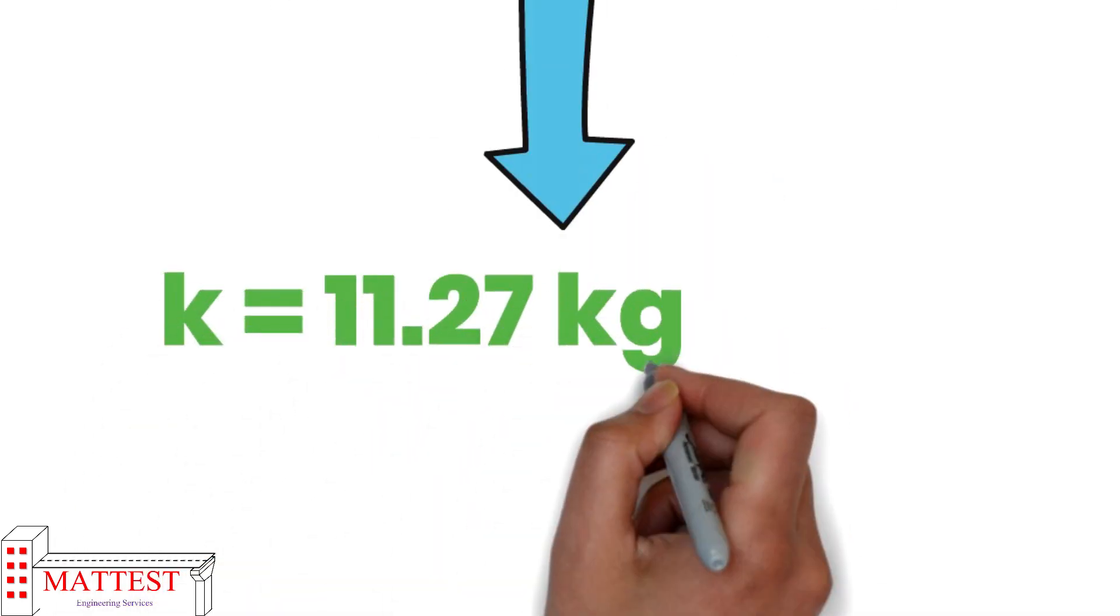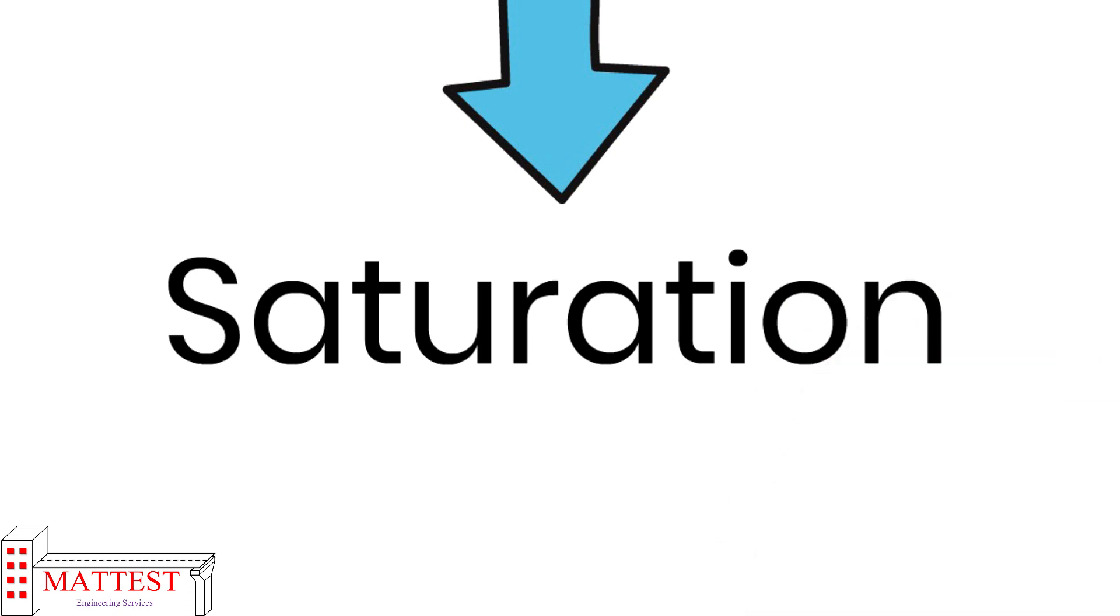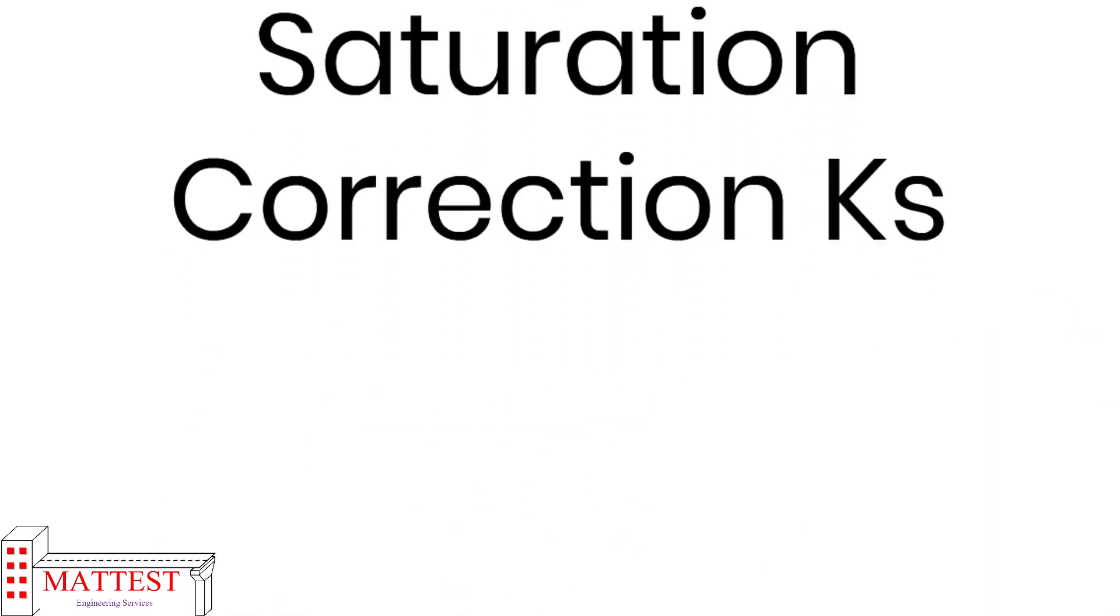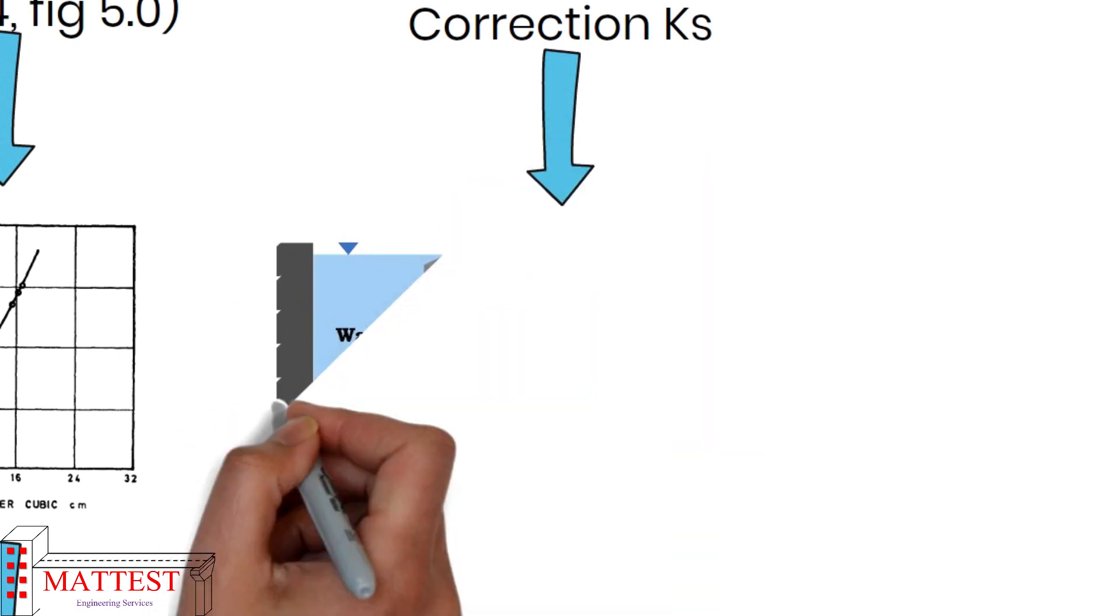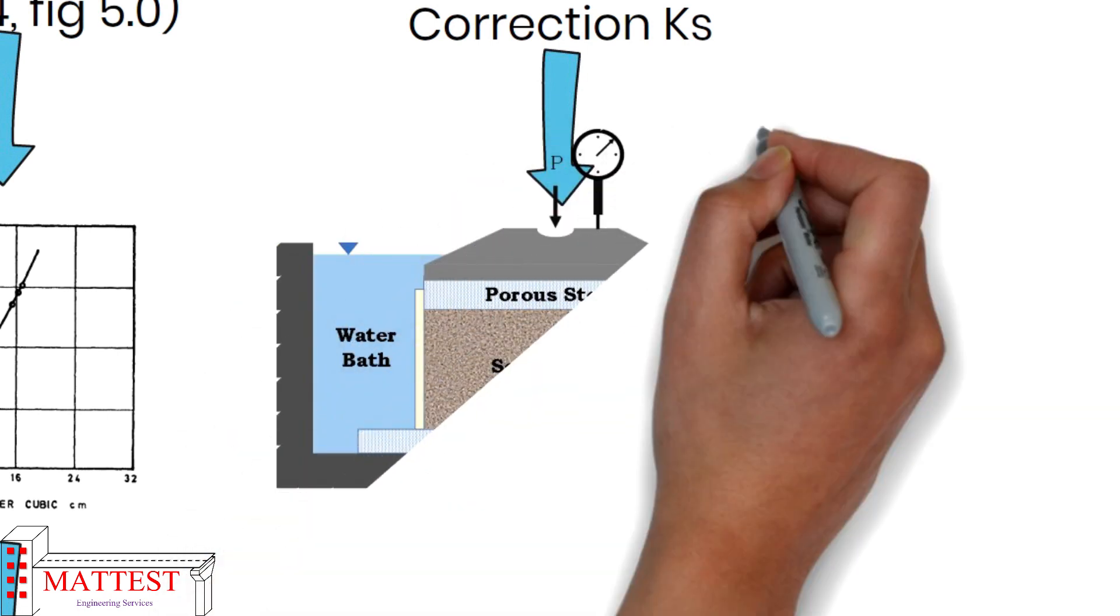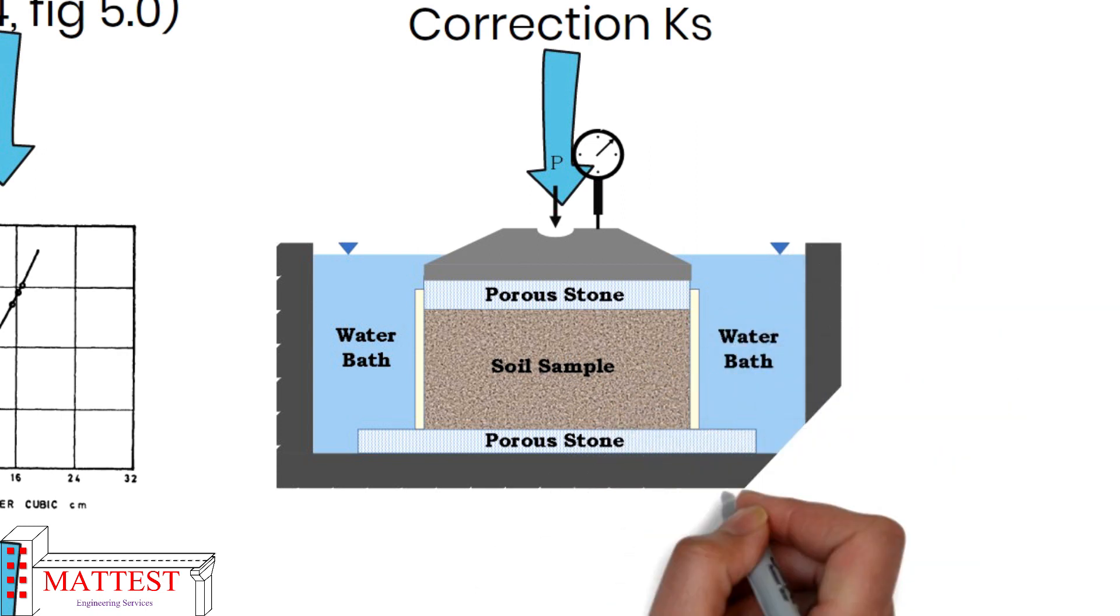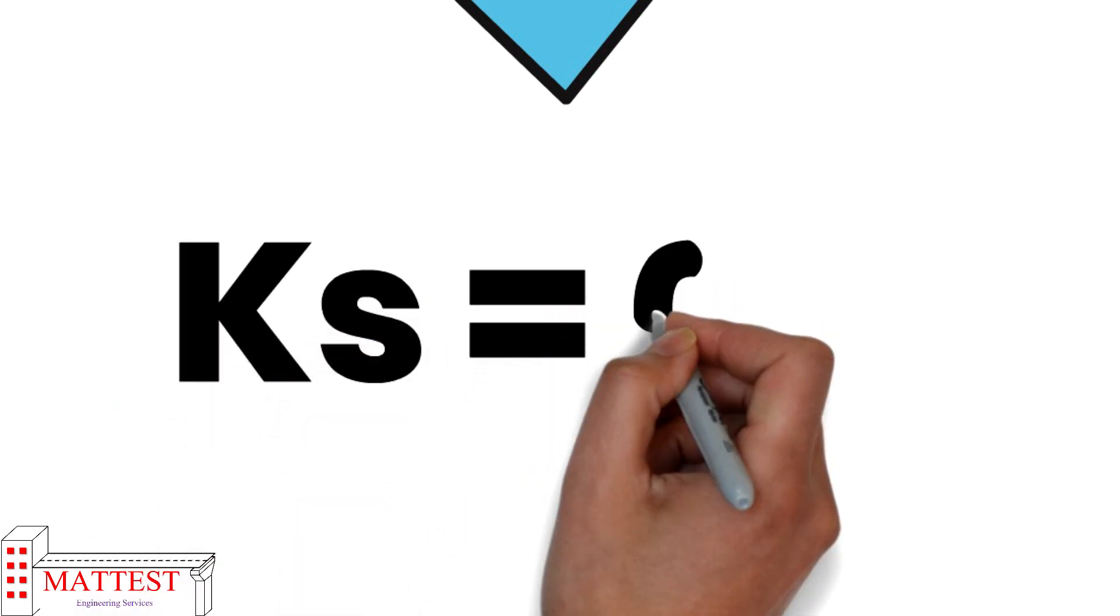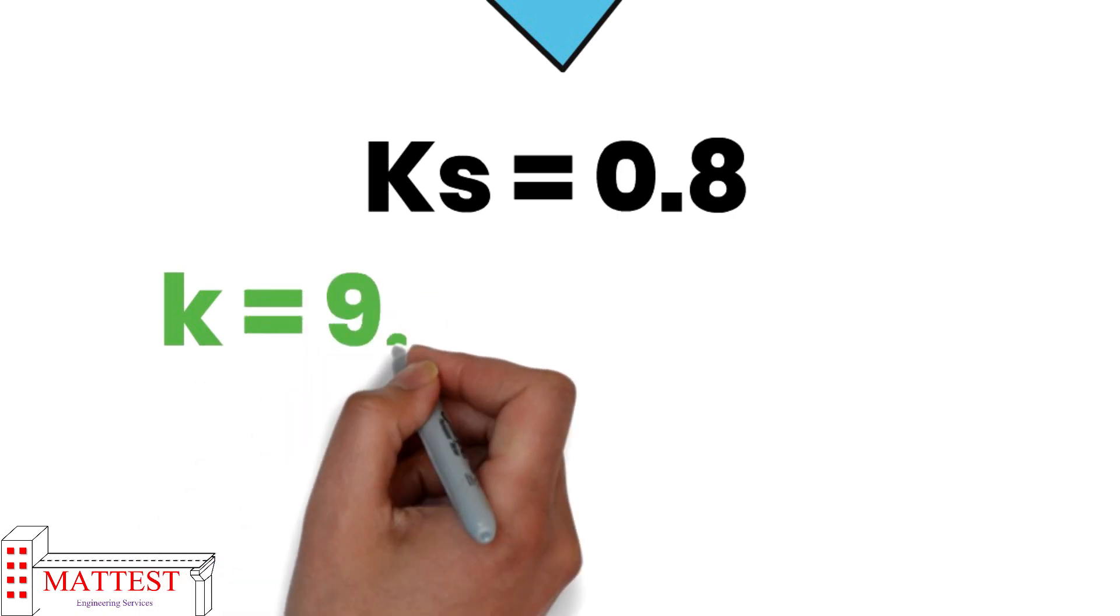The final correction is for saturation. This correction should be applied on the basis of consolidation test on the subgrade material. For that, take two samples of the undisturbed subgrade material for consolidation test to find the corrected value. Here Ks equals 0.8 which is obtained from the consolidation test result. Therefore our k value will be 9.02 kilogram per centimeter cube.